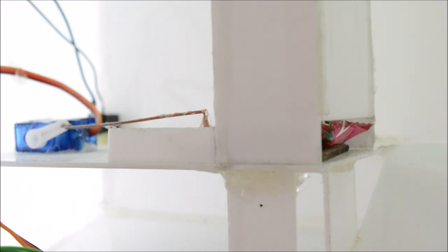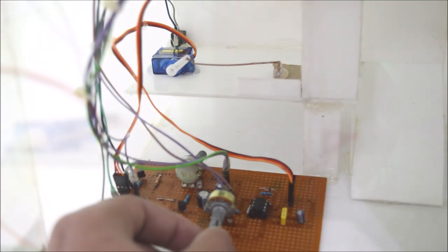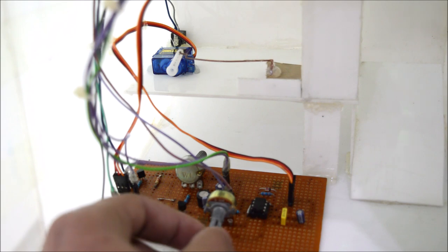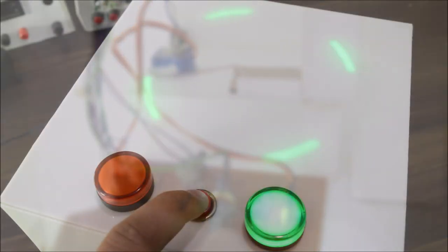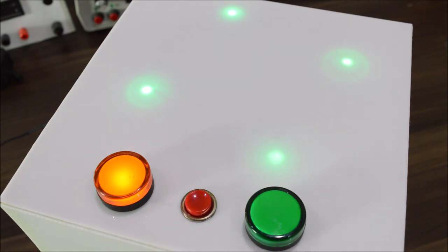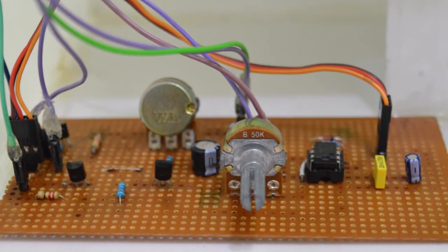Now the potentiometer you're looking at is used to set the initial position of the servo, just like so. Now that's pretty much it from my demonstration. I hope you like this project.